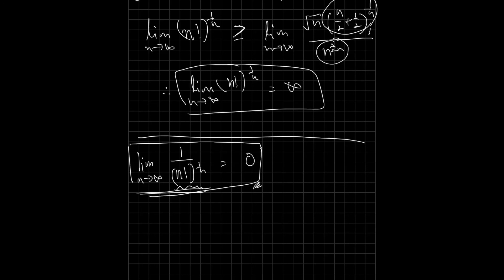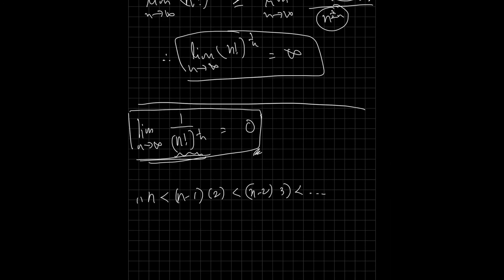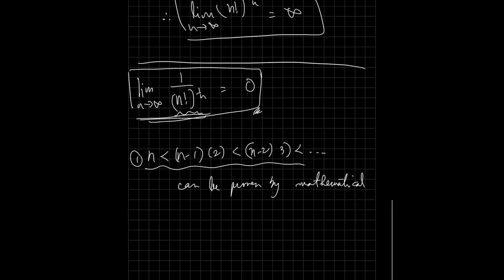Before we end the video, let's note that the inequality n times n minus 1 times 2 is less than n minus 2 times 3, and so on, can be proven by mathematical induction — we won't do it here, but try it. If you want a video for that, write in the comments. Also, we want to show that this auxiliary limit is 1, and we will show this in another video. Please hit subscribe.